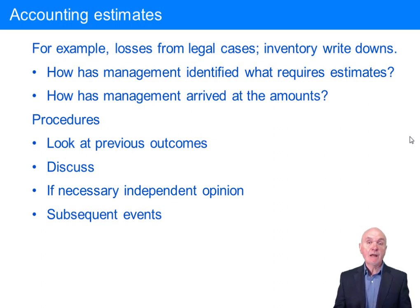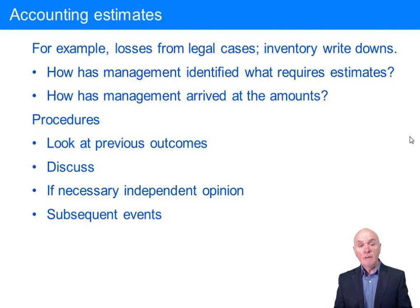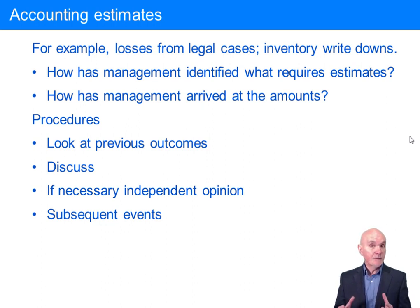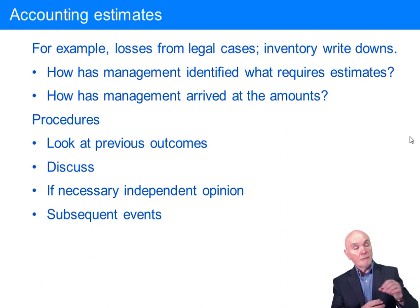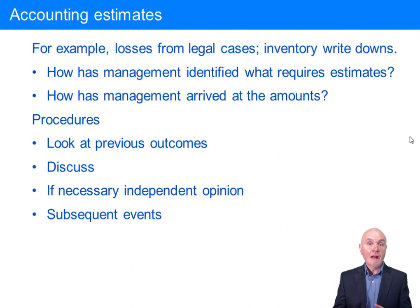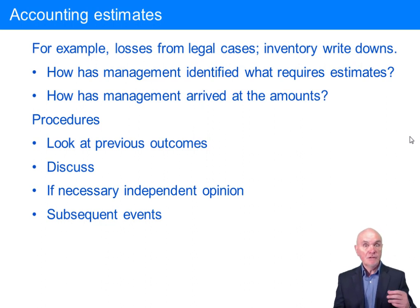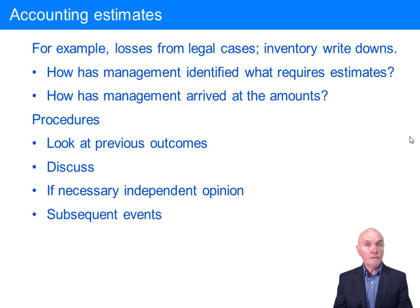We could look at previous outcomes — what happened in similar situations in previous years. We can discuss it with management, look at board minutes to see the discussions that have been going on, and look at correspondence with the parties involved. If necessary, this is another place where you bring in an expert. For example, if you're wondering whether a large building program still in progress will result in a profit or loss, it depends on the cost of work still to be done. The auditor might hire quantity surveyors to estimate remaining costs. And sometimes, if you wait a while, subsequent events will provide more information — or even definitive information — about the outcome of these estimates.